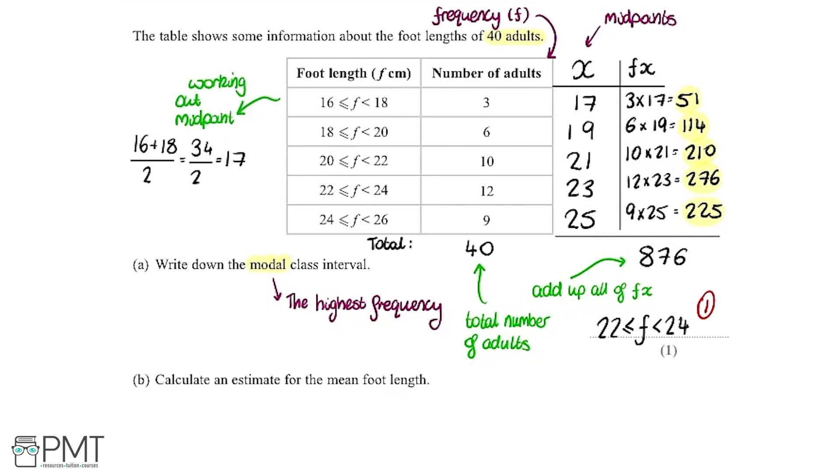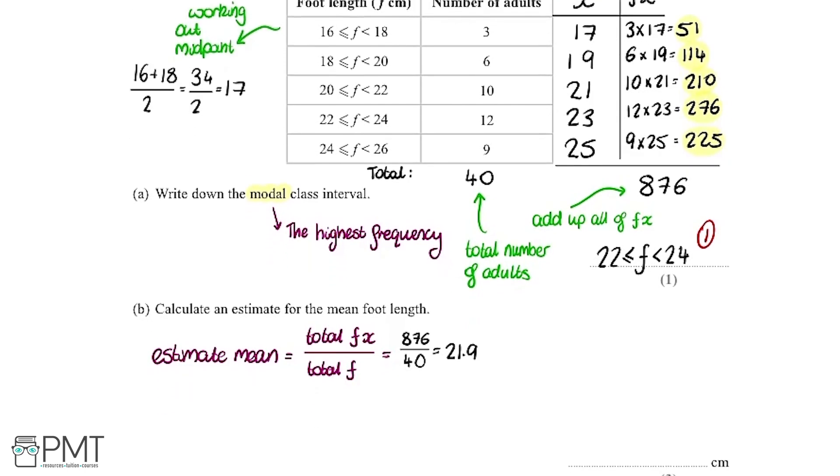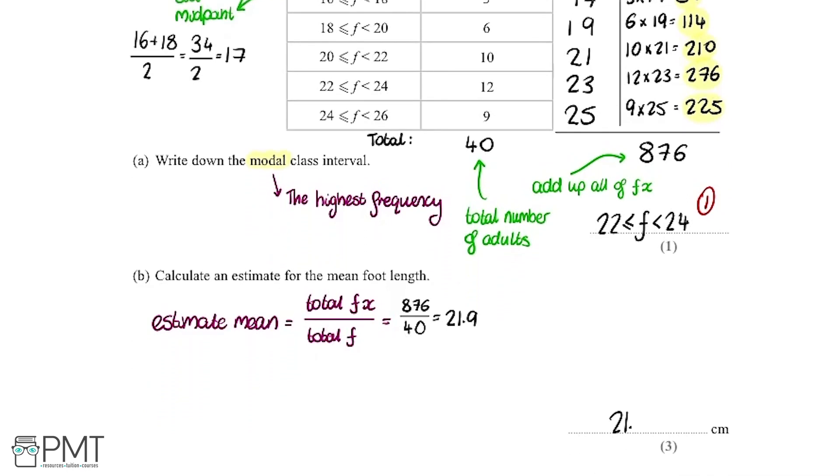Now we've got all the information we need to estimate the mean foot length. We usually think about a mean as everything added up divided by how many things there are. It's the same thing here. We've got the total f multiplied by x divided by the total frequency, so the number of adults in this case. We get 876 divided by 40 and popping that into the calculator we get 21.9 which is our final answer. In the answer box here we have 21.9 cm is our estimate for the mean foot length.